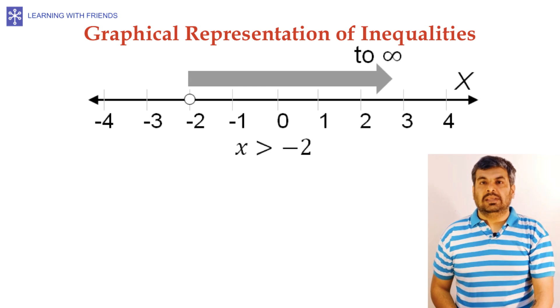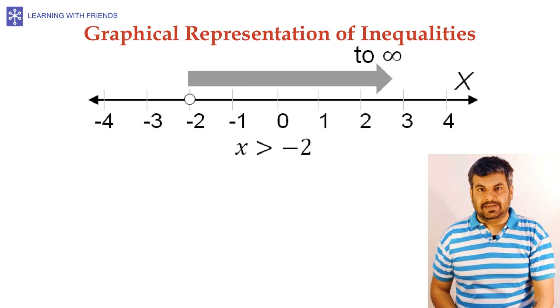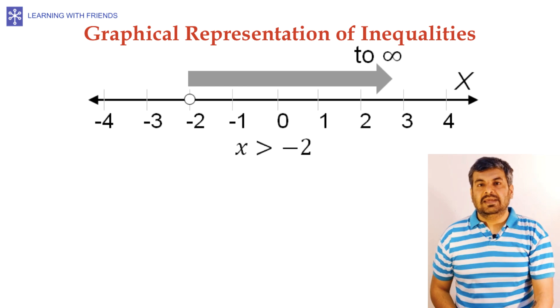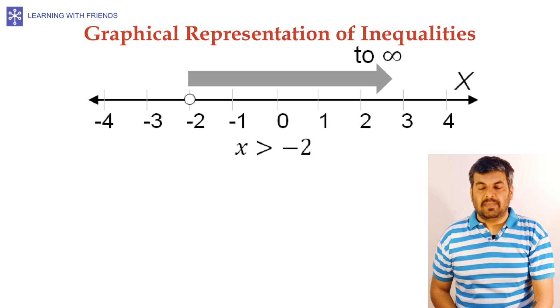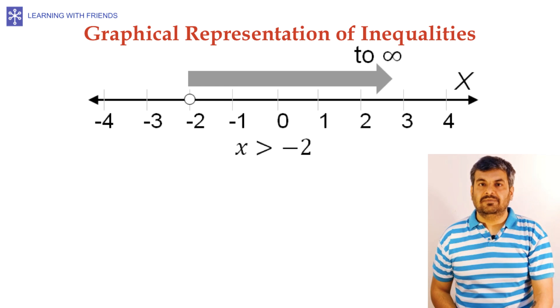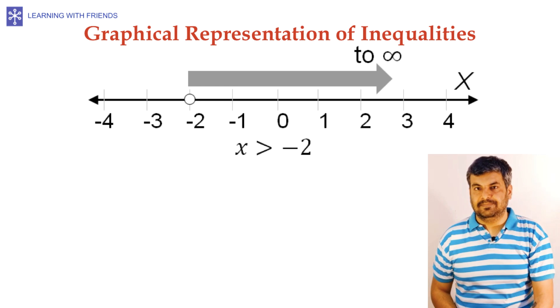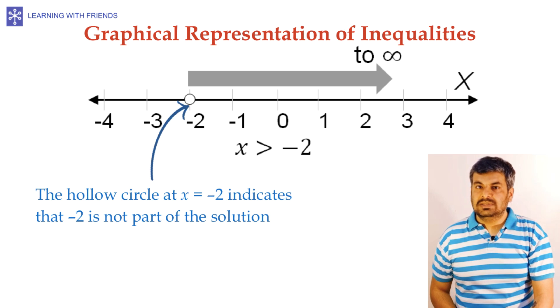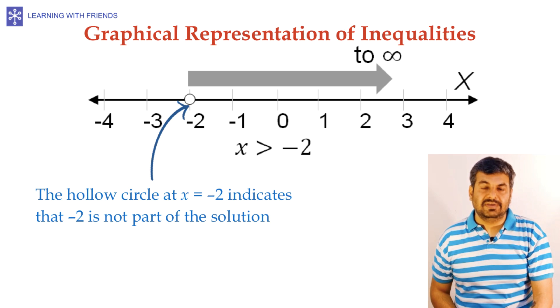Let's look at how inequalities are represented graphically. Consider the inequality x greater than minus 2. On the number line, we represent this inequality as starting from minus 2 and going up to infinity. There is a hollow circle at minus 2 to indicate that minus 2 itself is not a solution to this inequality.